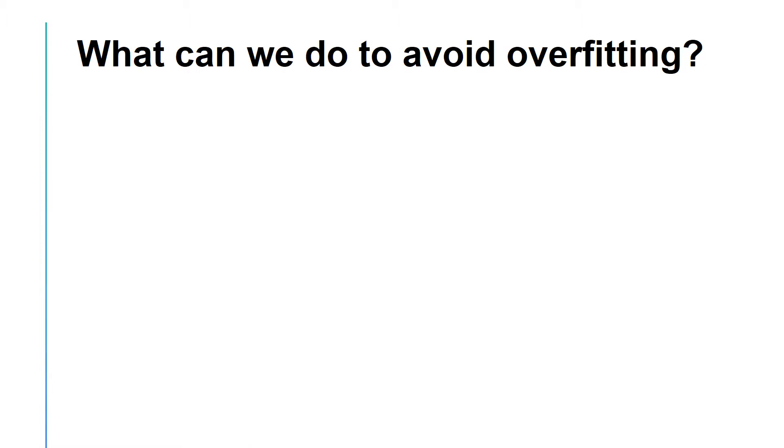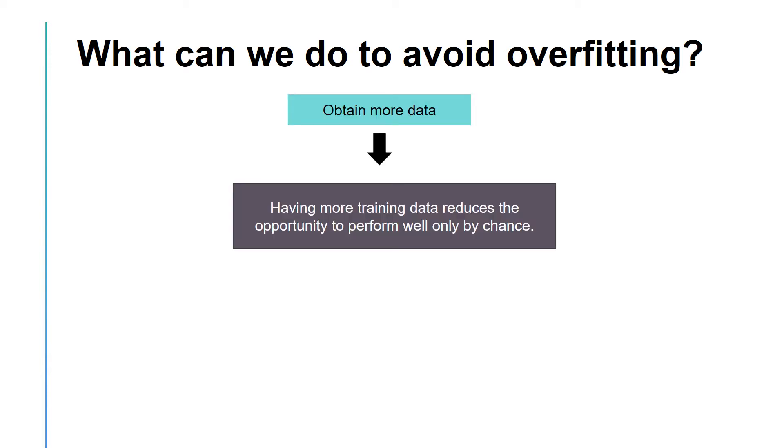Now, what can we do to avoid overfitting? One partial solution is collecting more training data. More data could reduce the impact of noise and can show the true representation of the problem you are trying to solve. Having more training data essentially reduces the opportunity for a random function to perform well only by chance.